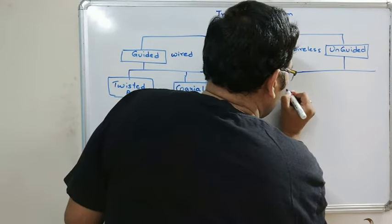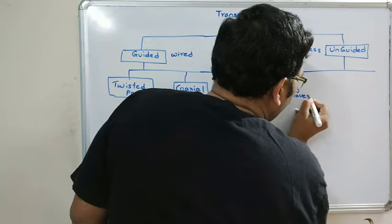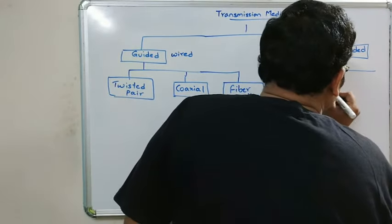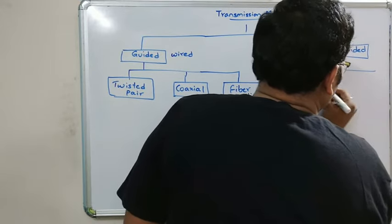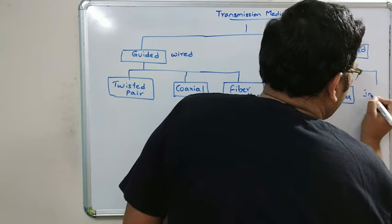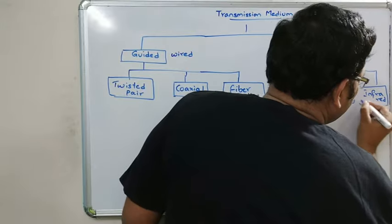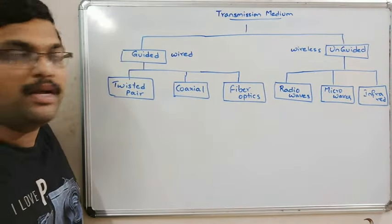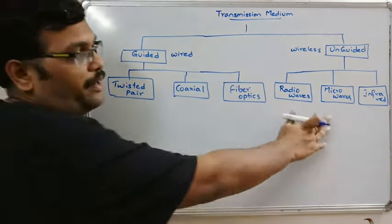The three wireless categories are: radio waves, microwaves, and infrared. These are all the wireless media, meaning there will be no wire.